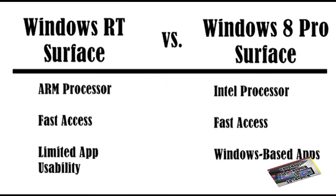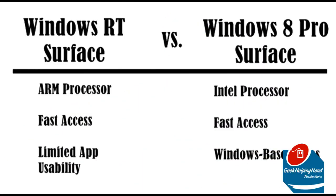Windows RT is for your average Windows consumer because it's running on an ARM processor. You have fast access to your classic desktop and it only supports certain apps. You have the option to buy a keyboard as well.